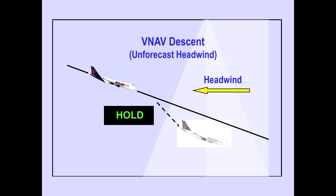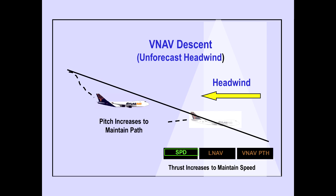During a VNAV descent, an unforecast headwind will cause the airplane to drop below the VNAV path. As the airplane drops below the VNAV path, the FMC directs an increase in pitch to maintain the path. As speed decreases, the FMC directs thrust to increase to maintain speed. The autothrottle mode changes to speed.